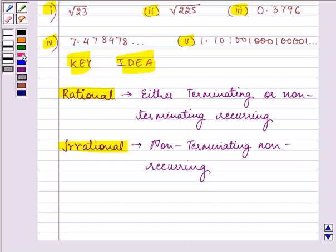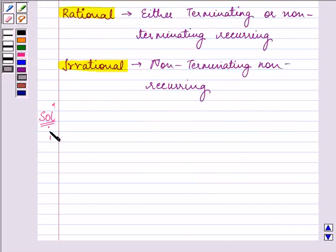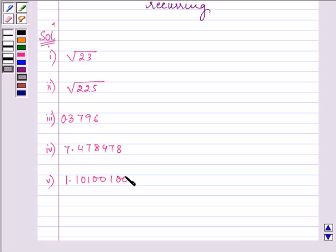Now, these are the numbers given to us. Let us write them one by one. The numbers are: root 23, under root 225, then we have 0.3796, then 7.478478, then 1.101001000 and so on. So about all these numbers we need to tell whether they are rational or irrational.